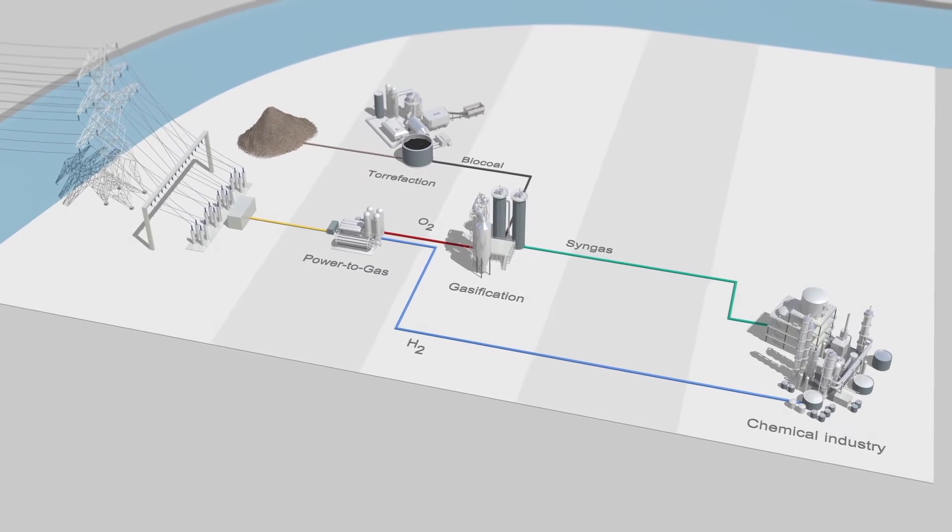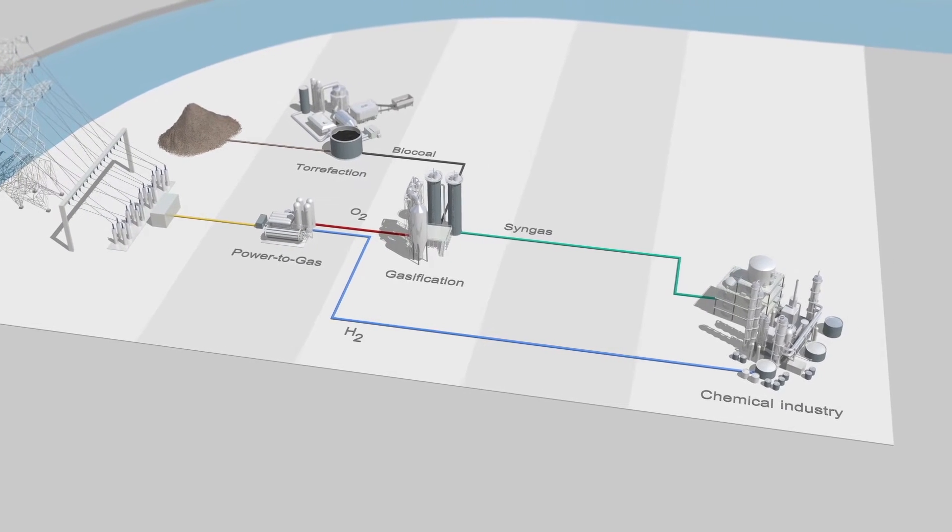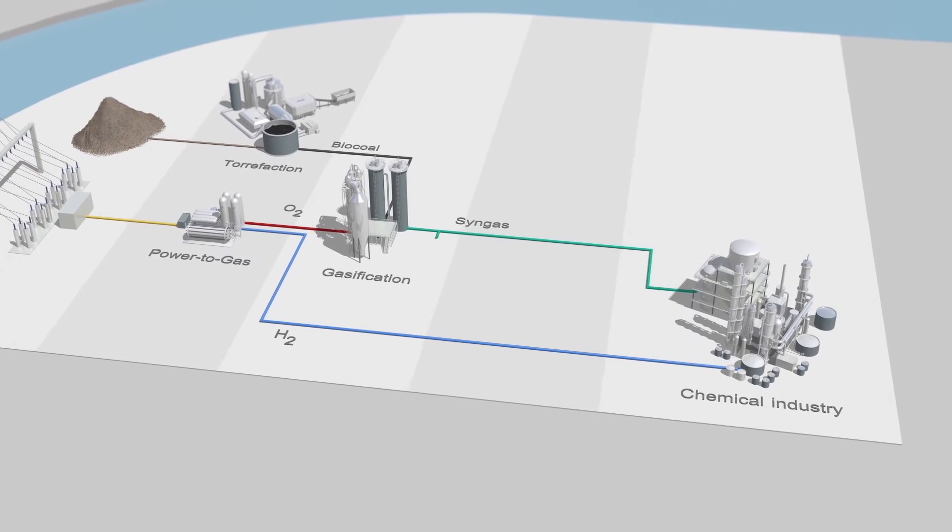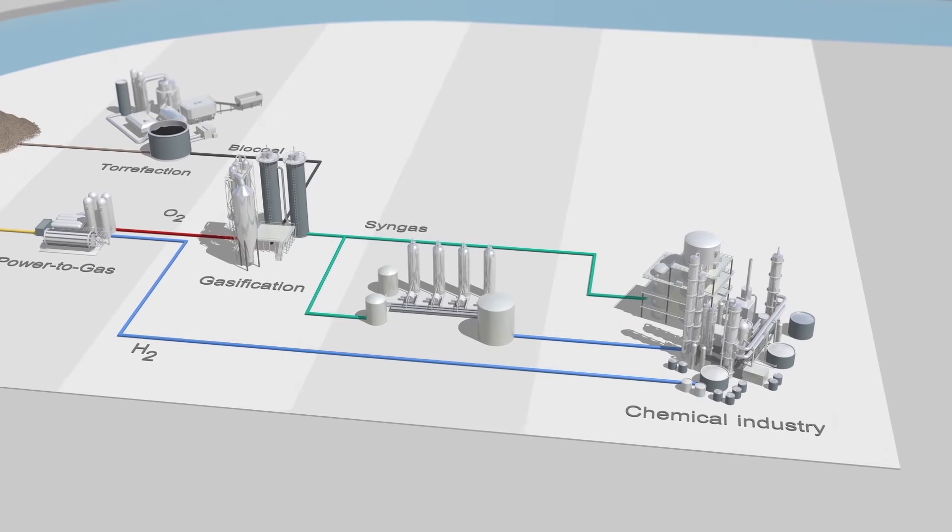Firstly, syngas itself is a green feedstock for many processes in the chemical industry. Secondly, also at this stage, syngas can be converted into hydrogen to be used in that same industry.